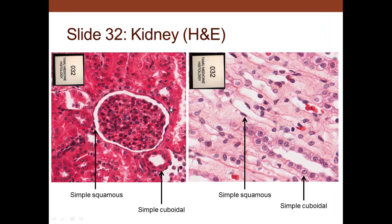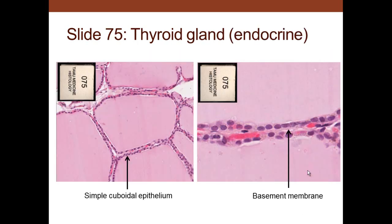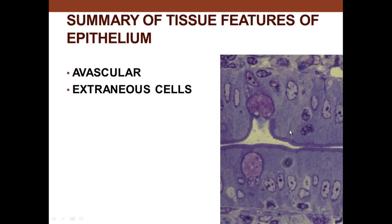In the kidney, we can see a host of different cell types. Cells that are cubed and one layer are simple cuboidal; cells that are flattened are simple squamous. The renal corpuscle has simple squamous parietal epithelium, there's simple squamous in the blood vessel, and simple cuboidal in the nephron. Simple cuboidal cells are also found in the thyroid — the follicular cells surrounding thyroid follicles are simple cuboidal, one layer of cube-shaped cells with a basement membrane.